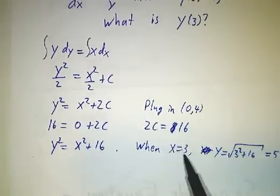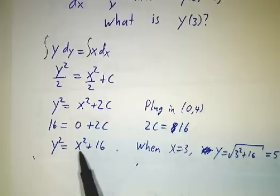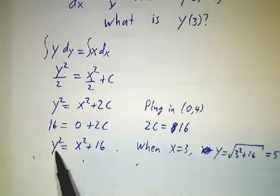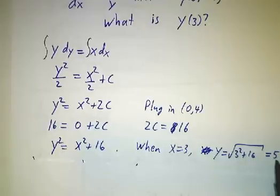So when x is 3, you say 9 plus 16 is 25. Take the square root of that, and the answer is 5.